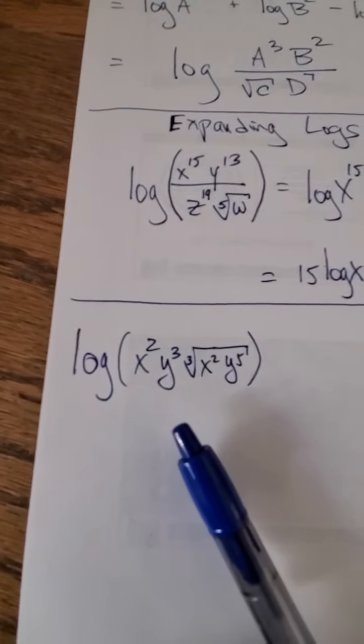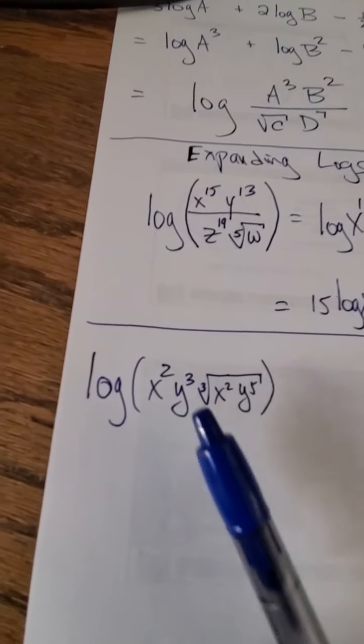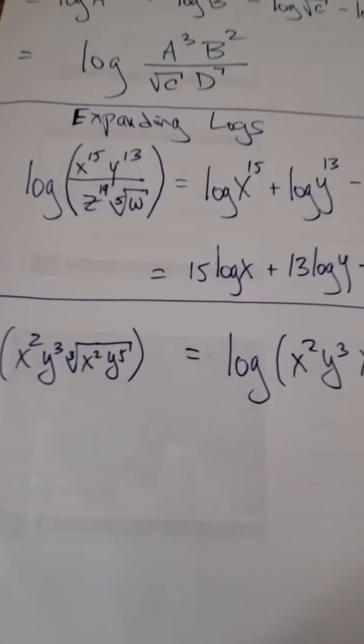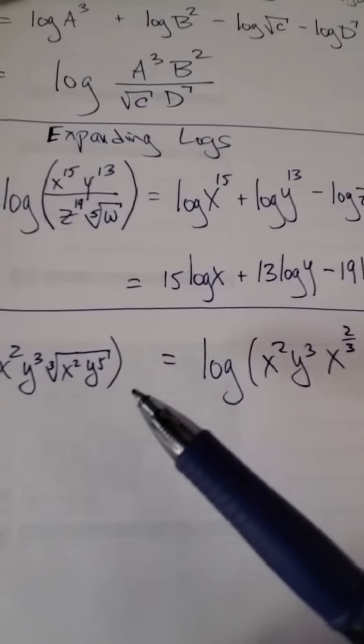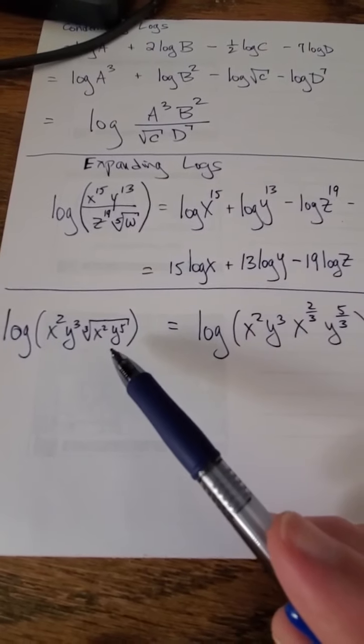Let's say we want to expand this guy over here. Well, before I do any expanding, I want to rewrite this. See, the cube root here is really a third power. So this is really x to the 2/3rds, y to the 5/3rds. I could change that.